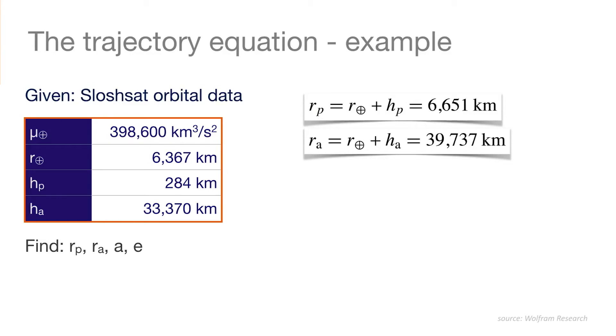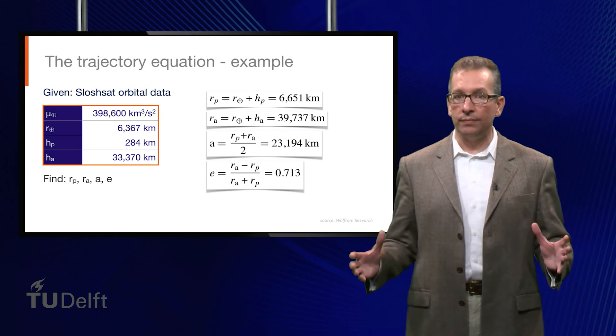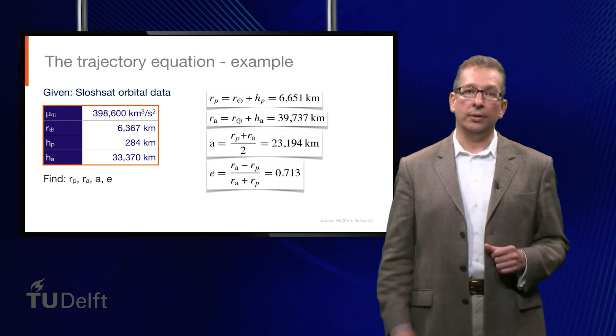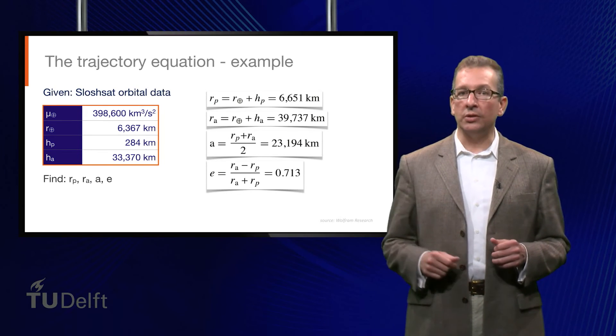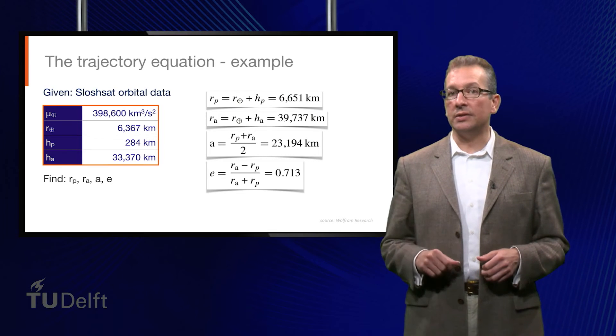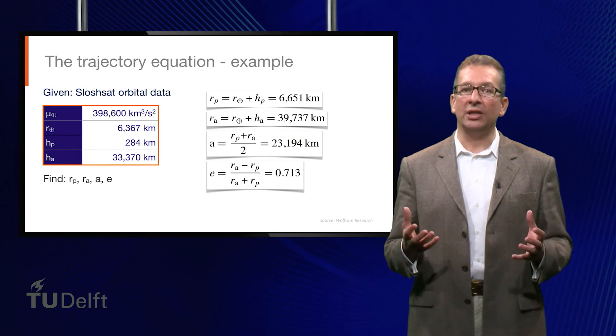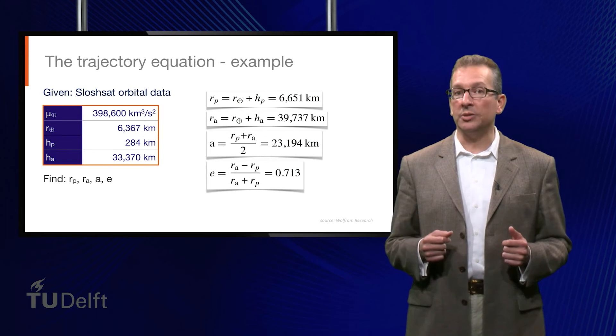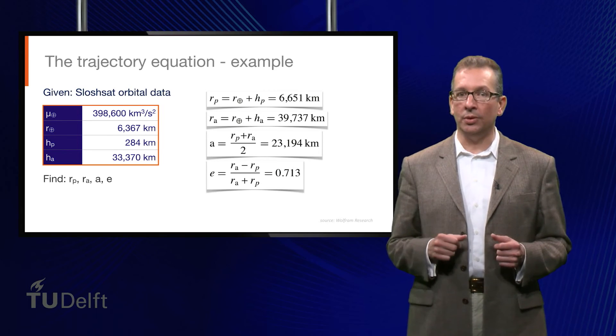Now, given rp and rA, we can calculate the semimajor axis to be about 23,000 kilometers, and the eccentricity to be about 0.71. Those give us the size and the shape of the orbit. These results can be checked against the reference sites I mentioned, which means that you have a virtually bottomless pit of practice material to work with, just what you were looking for.